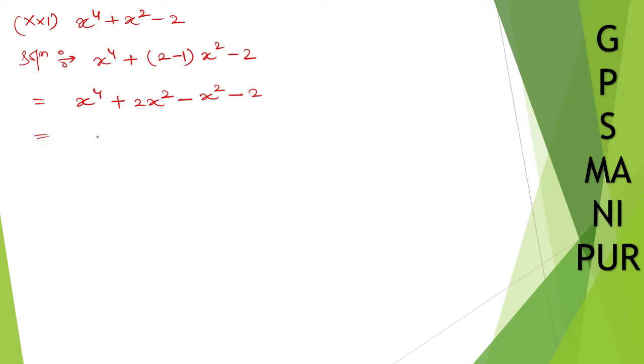X to the power 4 plus 2x square - take x square common. So what's left out here is x square plus 2. And minus 1, you take common, so what's left out here will be x square, and a minus goes out plus 2.